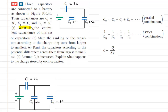In part A, we are asked: what is the equivalent capacitance of this set of capacitors? There are no numbers per se given in the question — we are only told expressions for each capacitor. So for example, C1 is equal to 3C, C2 is equal to 1C, and C3 is equal to 5C. So we're going to have to deal with that aspect of the problem.